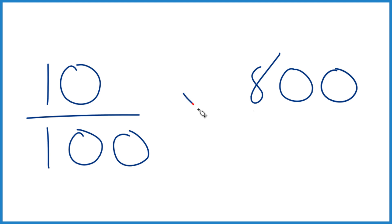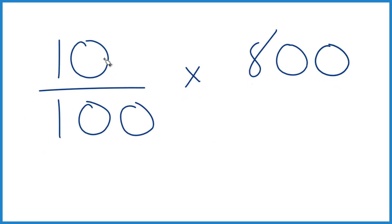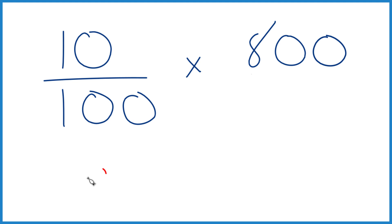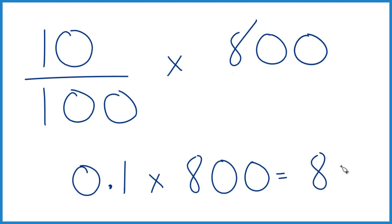So we end up with 10 over 100 times 800. 10 divided by 100, that's 0.1. We multiply that times 800. 0.1 times 800 equals 80. So 10% of 800 is 80.